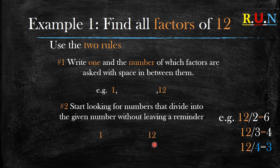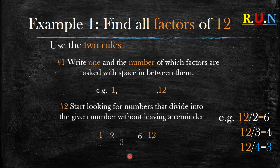Starting with rule one — write 1, space, 12. Now applying rule two: 12 divided by 2 gives you 6, which is a whole number, so you write the 2 on this side and the 6 on the other side. Then 12 divided by 3 gives you 4 — a whole number — so you write the 3 on this side and the 4 on the other side. When you say 12 divided by 4 it gives you 3, and you'll notice 3 and 4 are already in your list — they're just turned around — which means you've found all the factors.